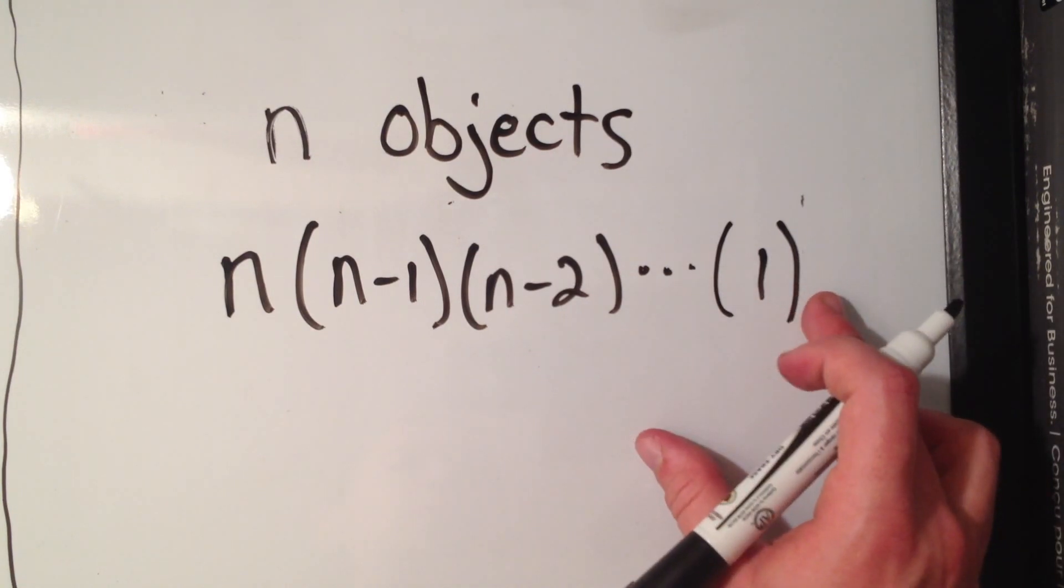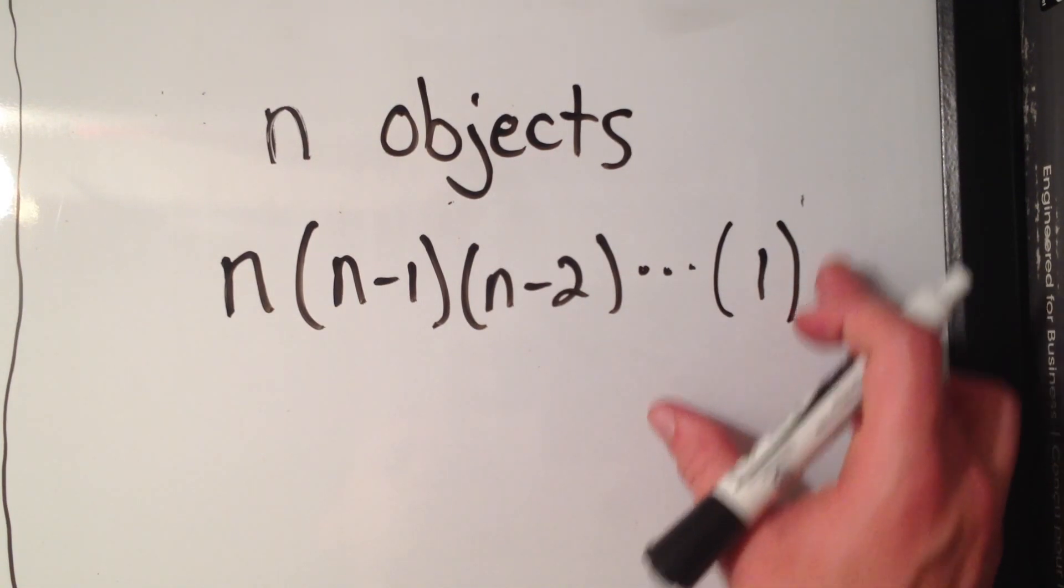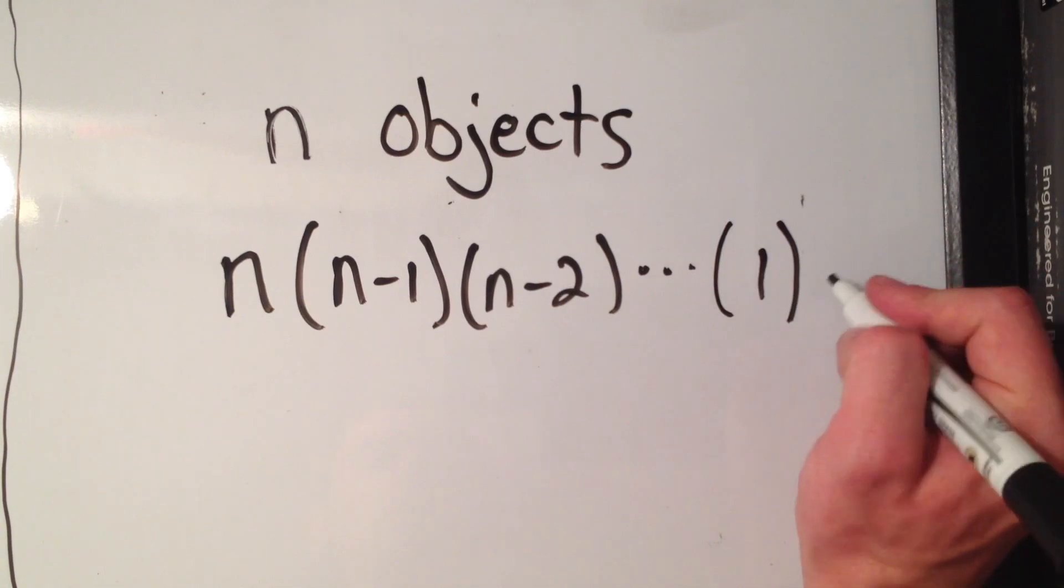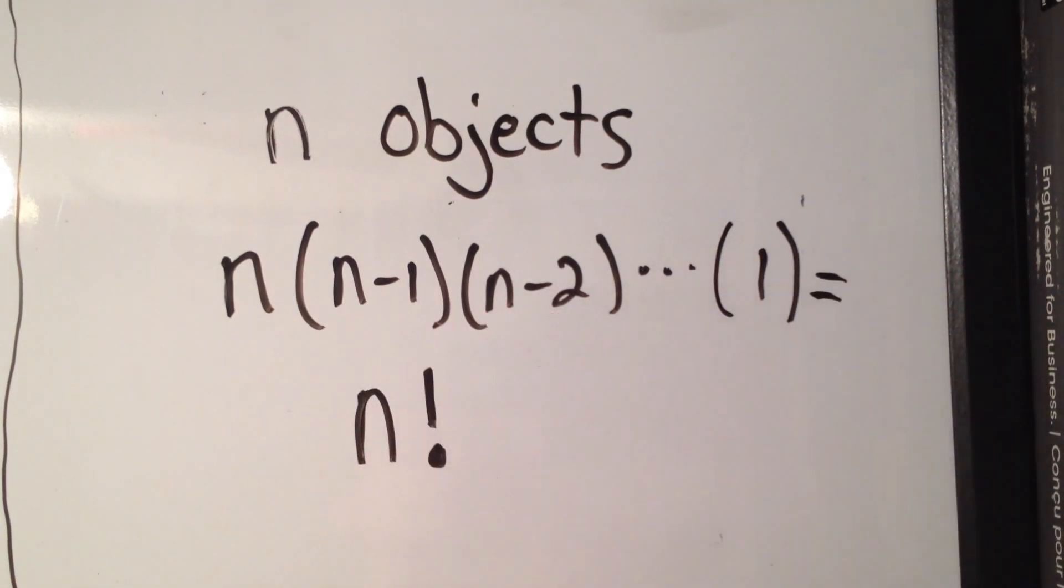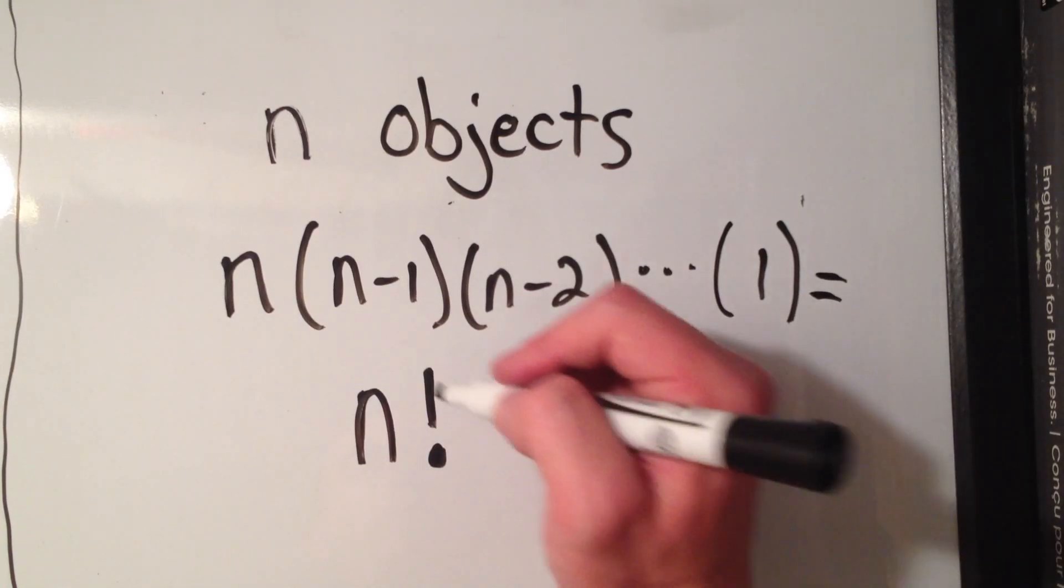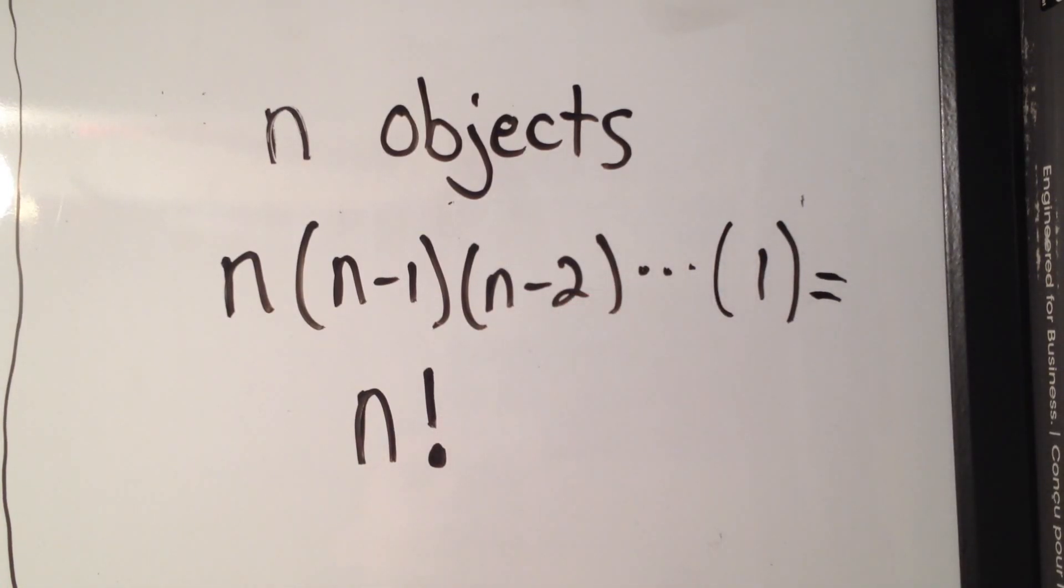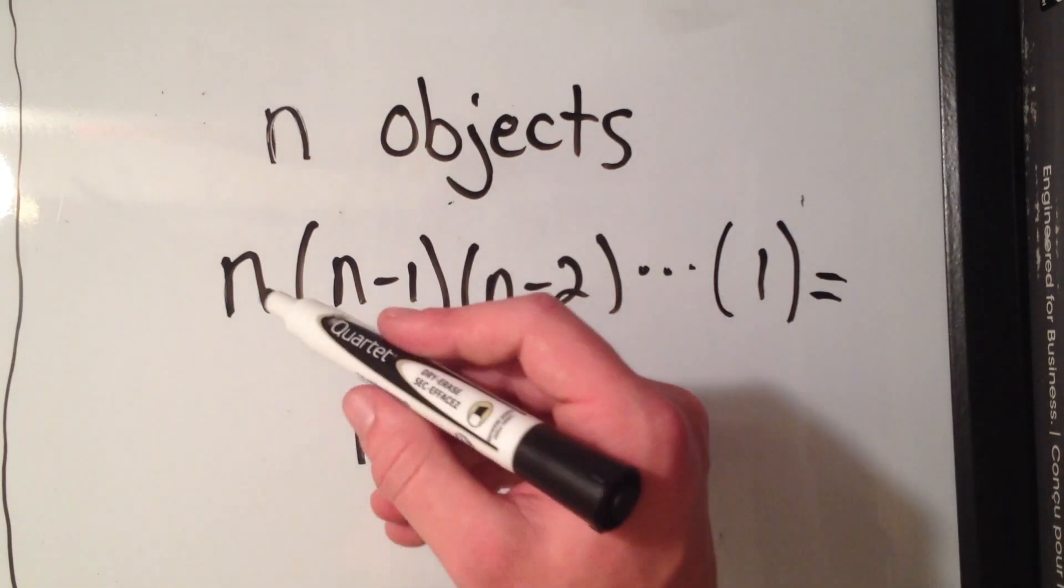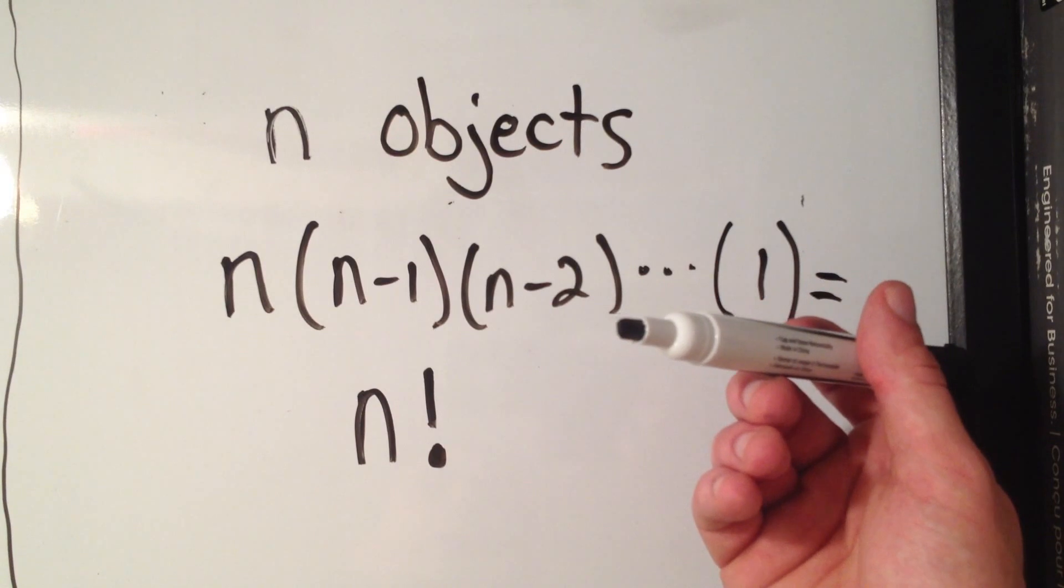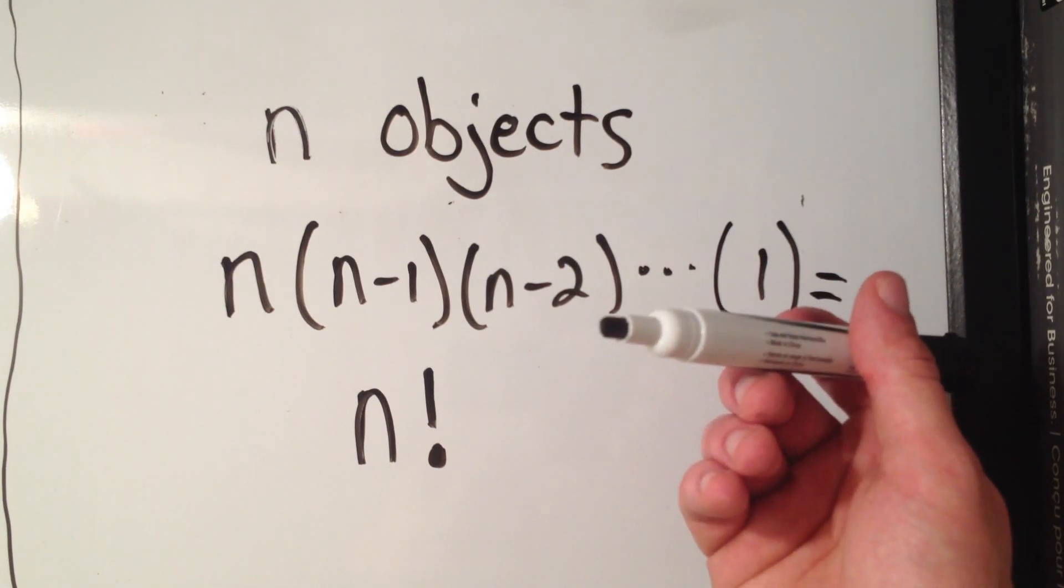And so maybe you've seen this before. This all simplifies into something called n factorial, and we denote that with an exclamation point. And all that means is that you do n times n minus one times n minus two all the way down to the last item.